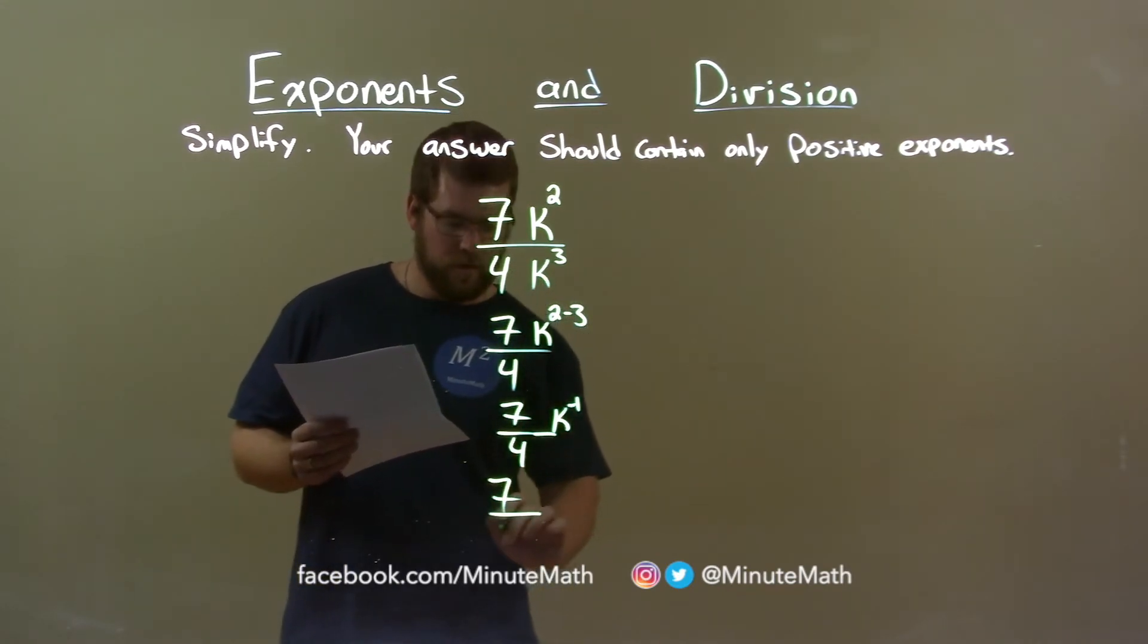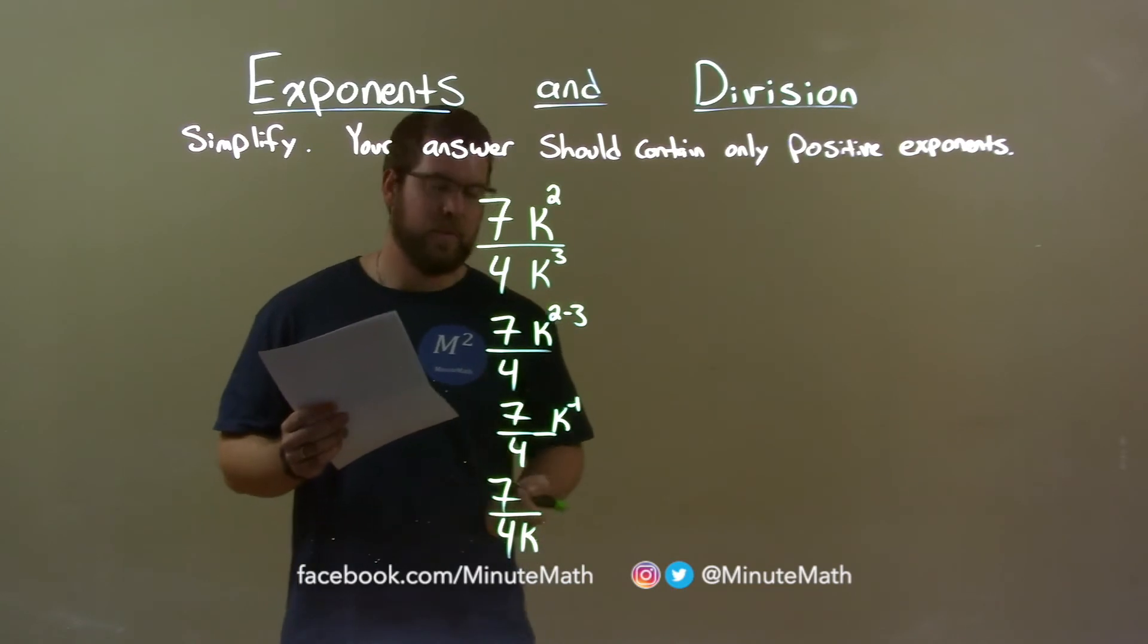So, we have 7 over 4k, and it's the first power, but we can just leave it as a k, and there we have our final answer.